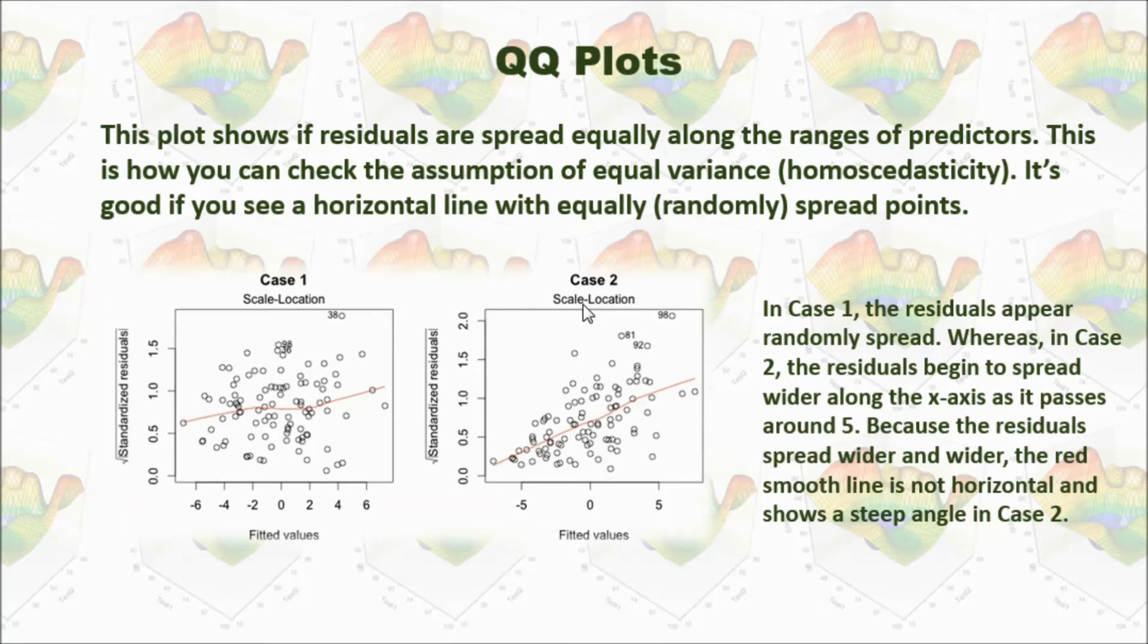But if you check case two, the residuals increase where the fitted values increase. And if you draw a line, it shows a slope. So the line is not horizontal. It shows it has heteroscedasticity.